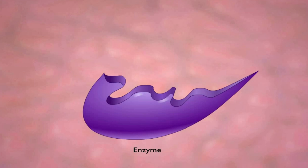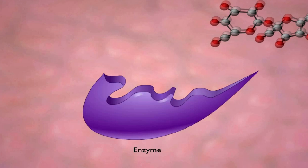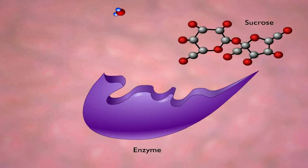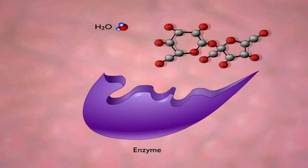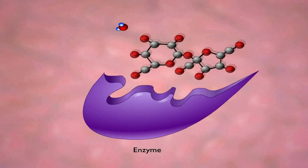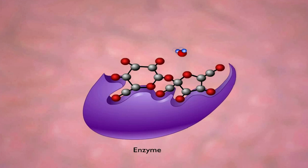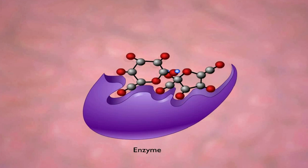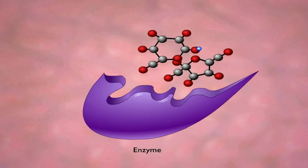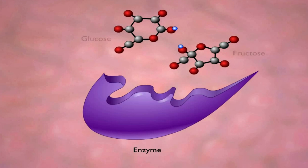This animation presents a graphical representation of the way that sucrase catalyzes the hydrolysis of the common disaccharide sucrose, which we know as table sugar, into its component monosaccharides — glucose, or blood sugar, and fructose, or fruit sugar.